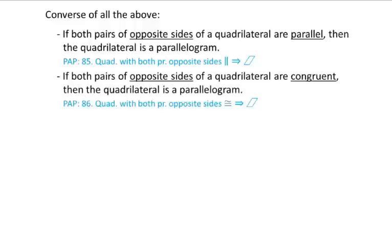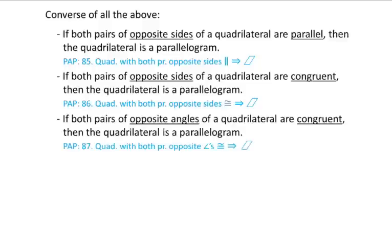Next, if both pairs of opposite sides of the quadrilateral are congruent, then the quadrilateral is a parallelogram — opposite sides congruent, then parallelogram. If both pairs of opposite angles of the quadrilateral are congruent, then the quadrilateral is a parallelogram — opposite angles congruent, then parallelogram.